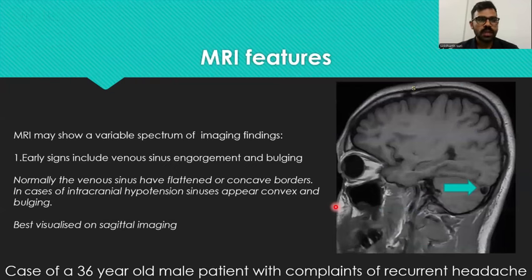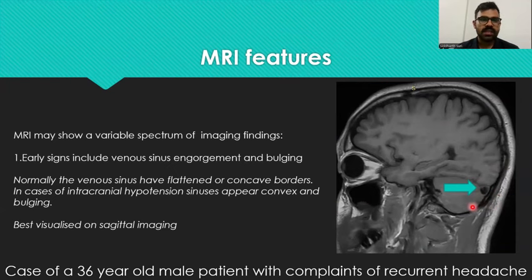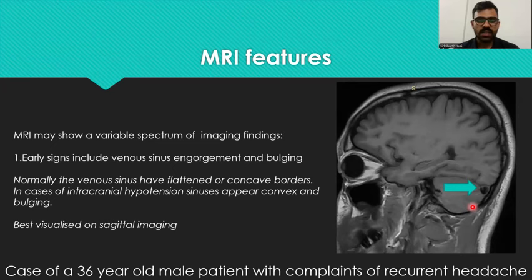MRI features. MRI may show a variable spectrum of imaging findings. Early signs include venous sinus engorgement and bulging. Normally the venous sinus has flattened or concave borders, but in cases of idiopathic intracranial hypotension these sinuses appear convex and bulging. This is best visualized on sagittal imaging and is demonstrated in a case of a 36-year-old male patient with complaints of recurrent headache.